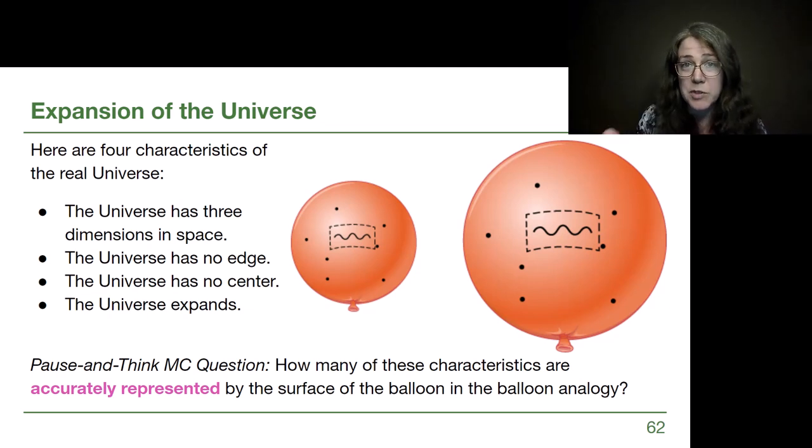So there are four characteristics of the real universe that we have already talked about. There's three dimensions of space, the universe has no edge, the universe has no center, and the universe expands. So I want you to pause the video to think about this question, and I've called it multiple choice because your options are zero, one, two, three, or four. How many of these characteristics are accurately represented by the surface of the balloon in this analogy? So pause to think through each one and kind of ponder that idea.